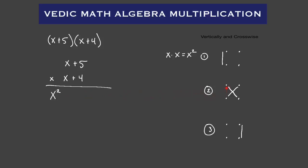Our second step is crosswise. So what that means is we're going to multiply X times four and then add the product of five and X. So step number two, we have four X plus five X. We got those by multiplying four times X, which gives us four X, and then five times X gives us five X. So four X plus five X equals nine X. We write that in: nine X.